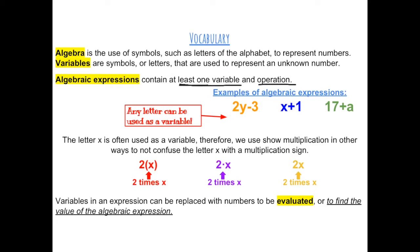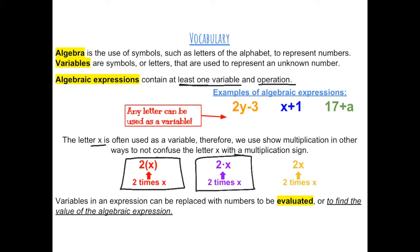Here are some examples of algebraic expressions. The letter x is often used as a variable. Therefore, we show multiplication in other ways to not confuse the letter x with a multiplication sign. You might see 2 times x with parentheses, or 2 times x with a dot. Or, we often just write a number next to the variable, and this represents multiplication.